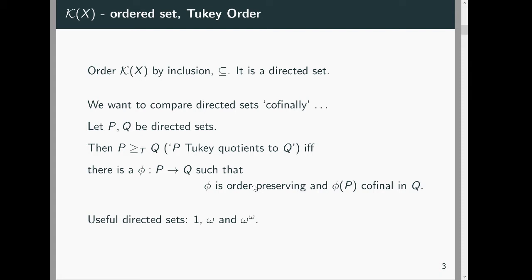What do I mean when talking about K of X as an ordered set? We can order it by inclusion. Considering K of X as an ordered set and isomorphism of partial ordered sets turns out to be too fine. A better way in our context is to consider what happens to our compact sets co-finally.